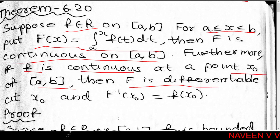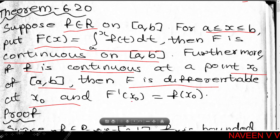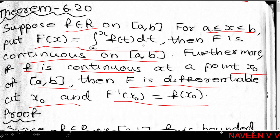Given function f on closed interval [a,b] is Riemann integrable. We define capital F of x equal to the integral from a to x of f(t) dt, for all x belonging to [a,b]. Then we need to show capital F is continuous on [a,b].